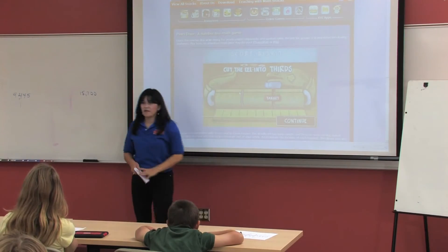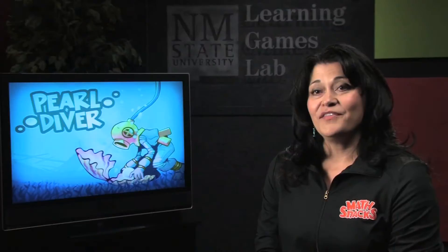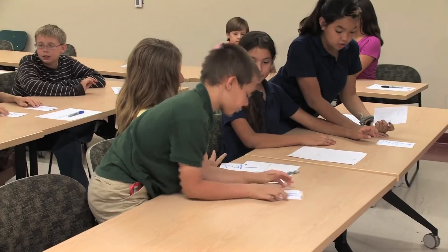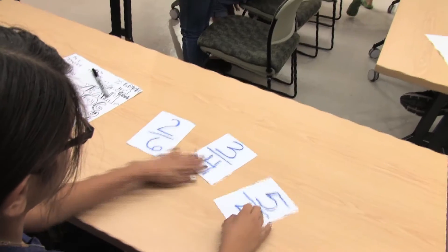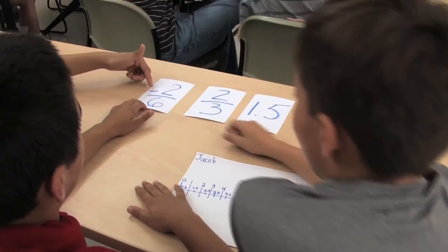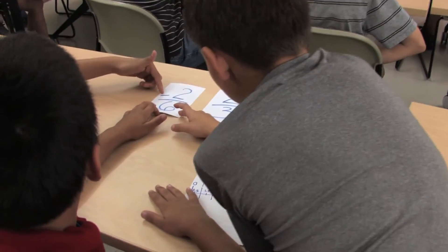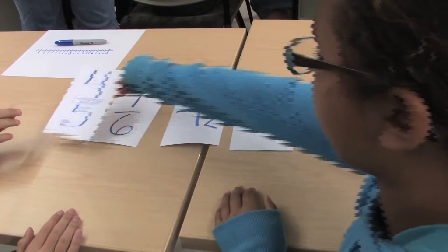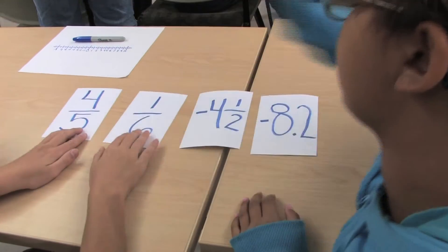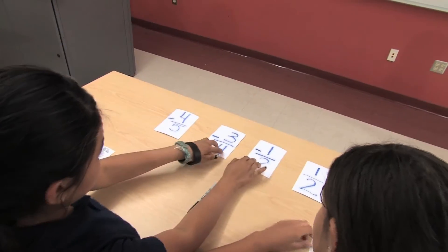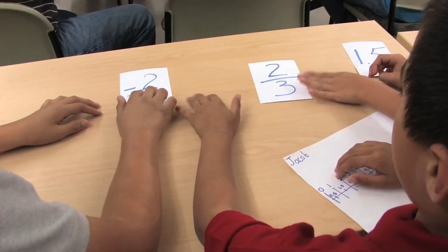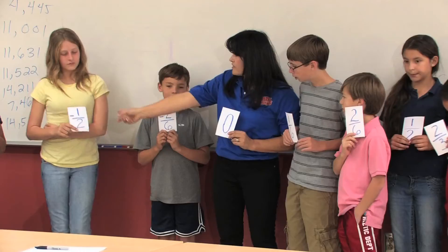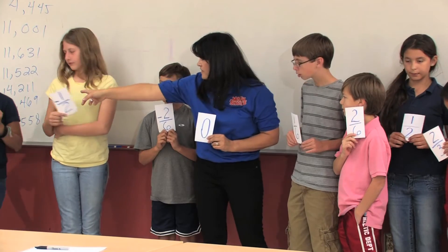In their small groups, I give them cards with different kinds of numbers — we have positive, negative, fractions, improper fractions, decimals, whole numbers — and they have to put them in order from smallest to largest. Then we take all of those numbers as a whole class and put them on a big number line to work with.